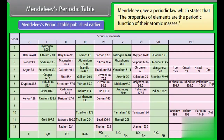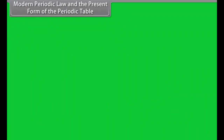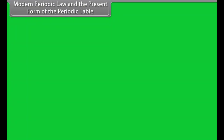For example, both gallium and germanium were not discovered at the time when Mendeleev proposed his periodic table. Mendeleev named these elements as Eka-aluminium and Eka-silicon respectively. Third, with the help of this table, the doubtful atomic masses of certain elements were corrected.